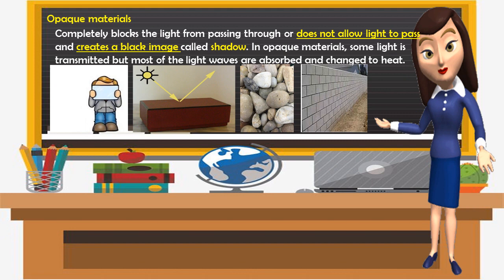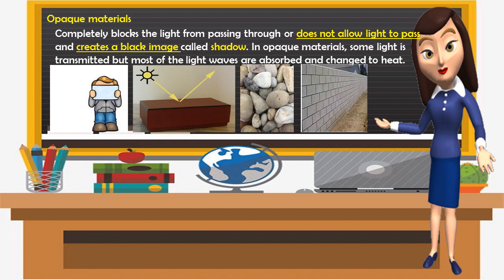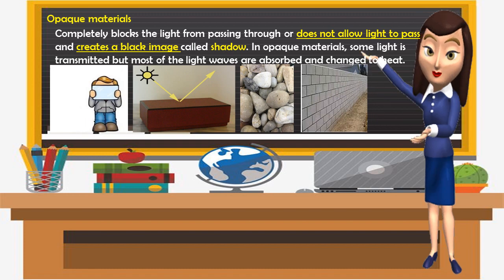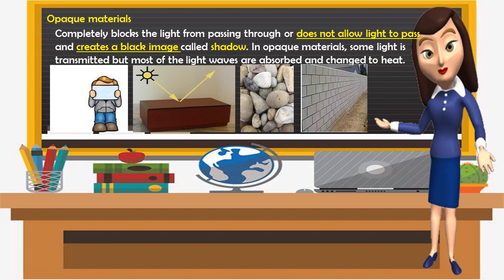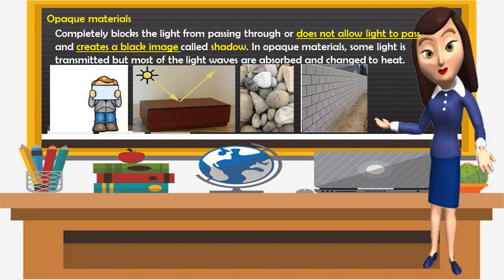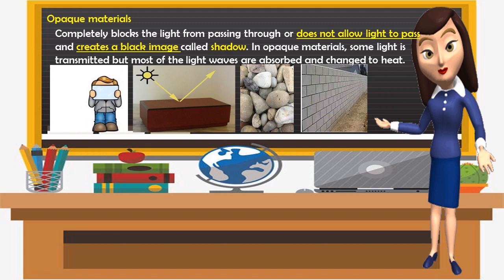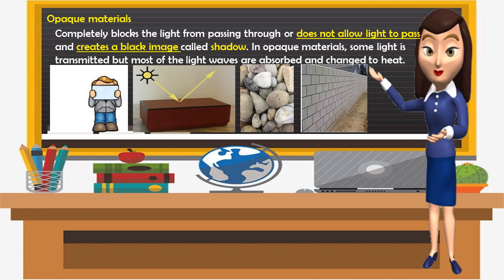Opaque materials completely block light from passing through, or do not allow light to pass, and create a dark image called a shadow. In opaque materials, some light is transmitted but most of the light waves are absorbed and changed to heat. Examples of opaque materials are wood, stone, and bricks.